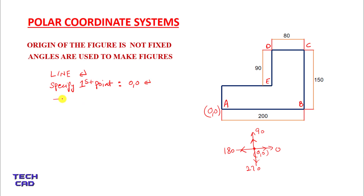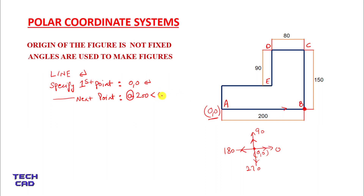Then it will ask you to specify the next point. Now what could be the coordinates of point B? Instead of making the coordinates of B, I am using polar coordinate system. We have to put the at-sign (@), as we put in relative coordinate systems, and then what is the length of the line — in this case it is 200. Then the less-than sign from the keyboard, and then what is the angle of this line with respect to the origin. With respect to this origin, my angle is zero because my line moves towards the right side. Then enter.